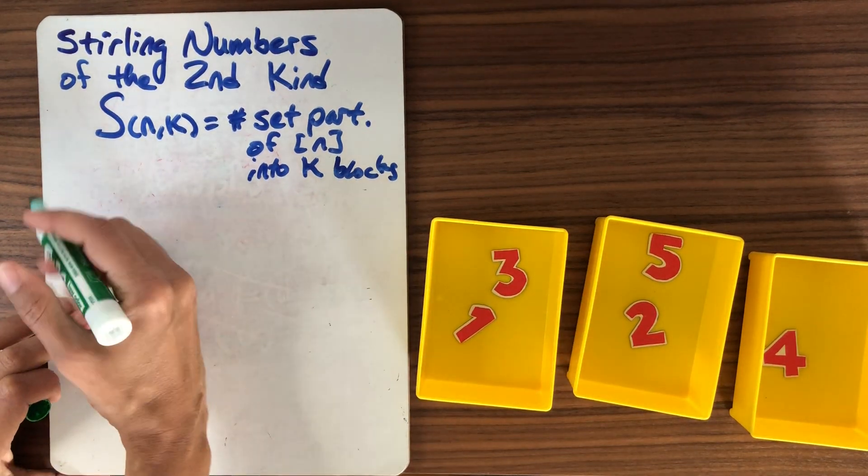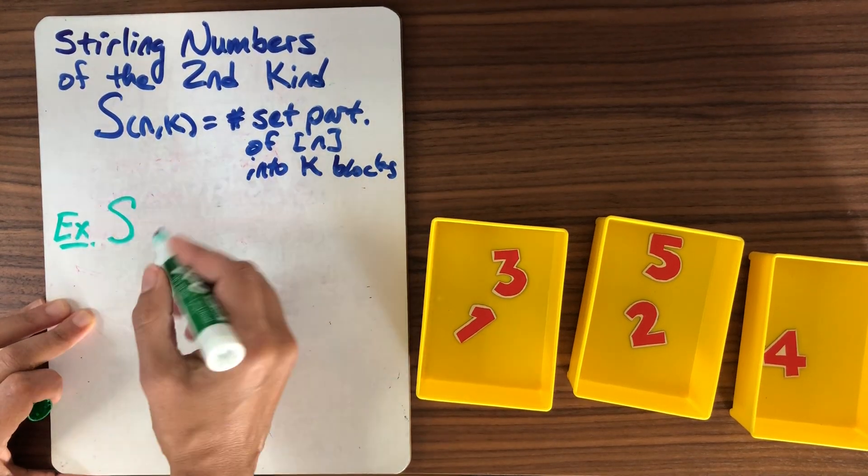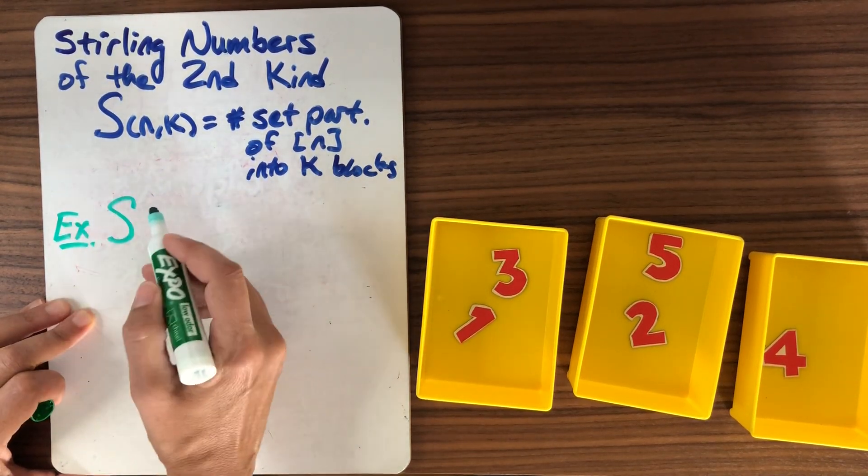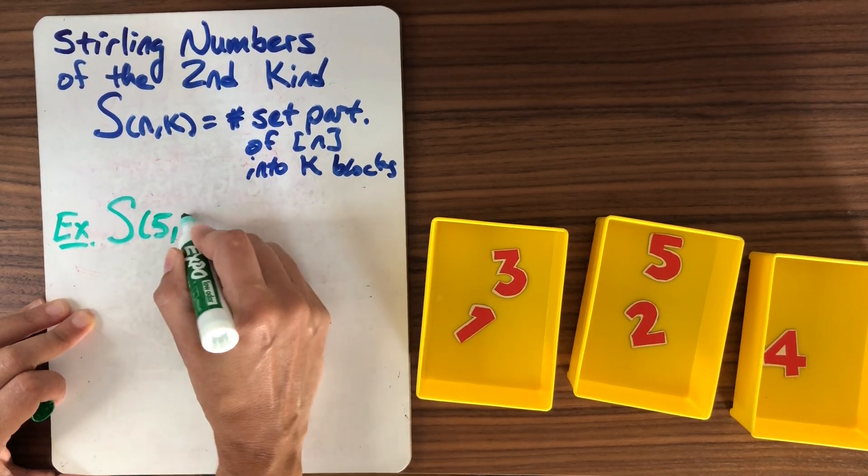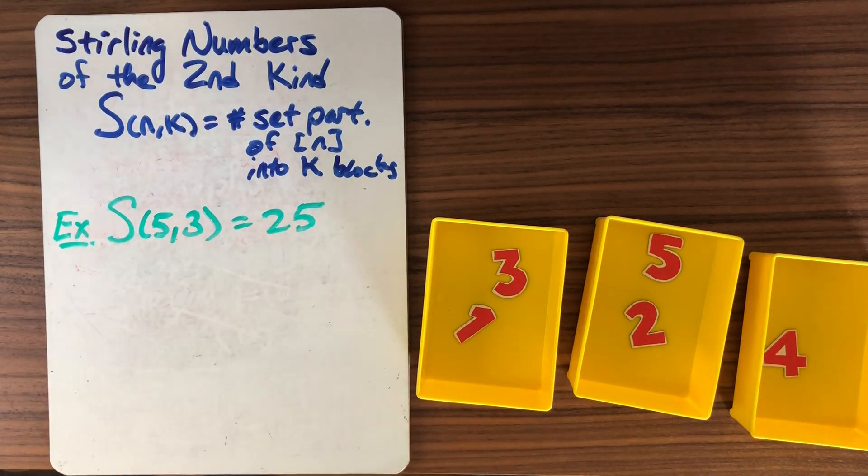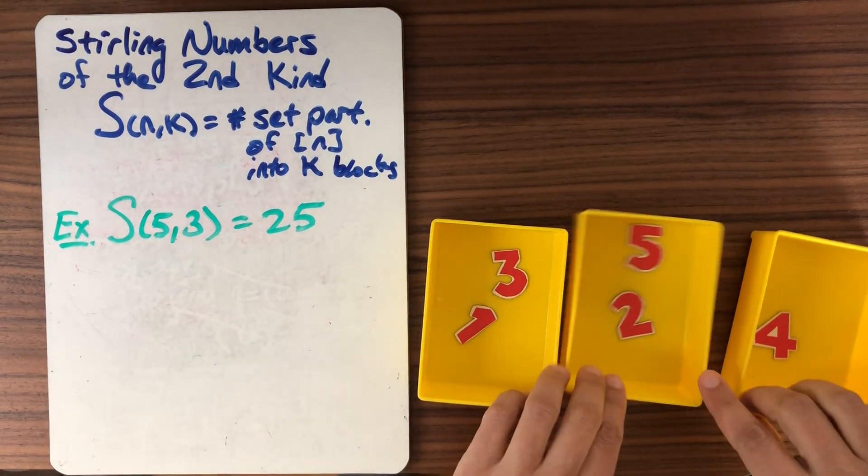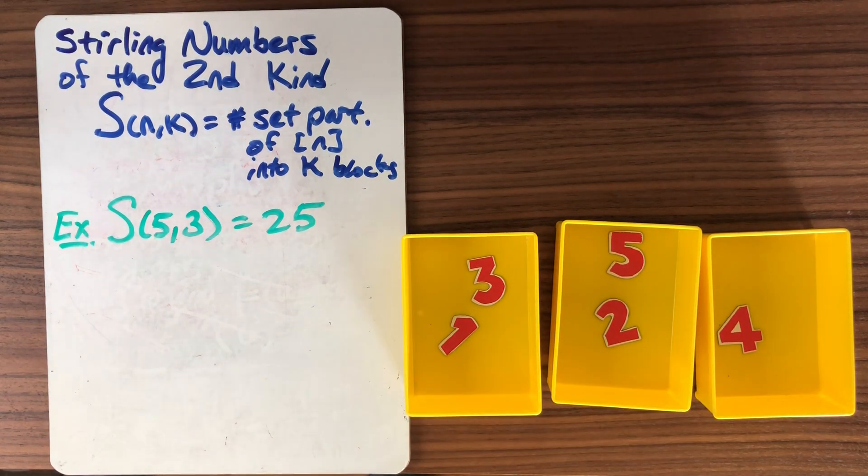So here I would create a set partition by throwing my numbers into these boxes. And we had ways to derive these. We can get a formula for the Stirling numbers of the second kind using some of our generating function techniques and also using inclusion-exclusion. And we saw that this is one of the 25 examples of how I could do a set partition of the numbers 1 to 5 into three blocks.